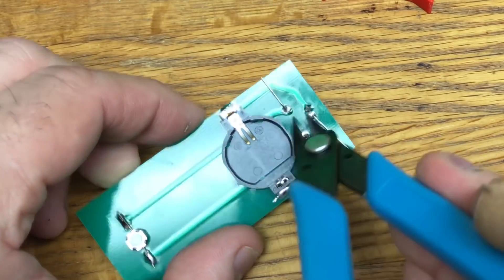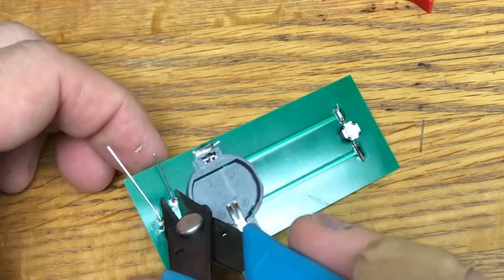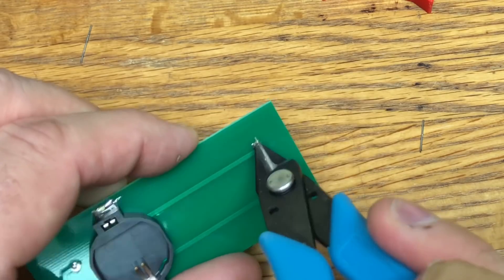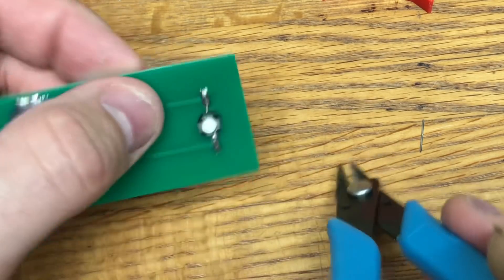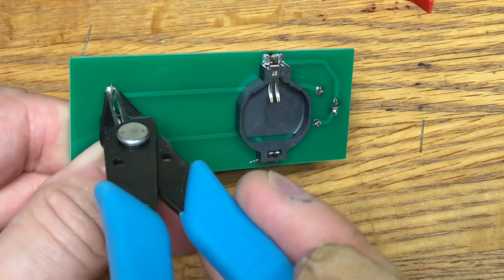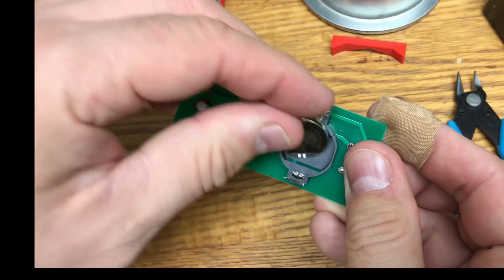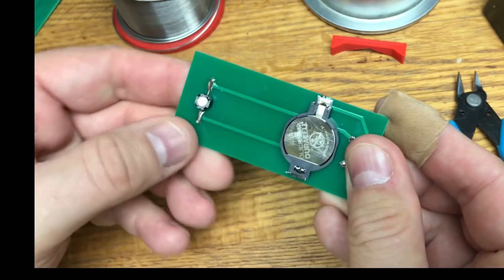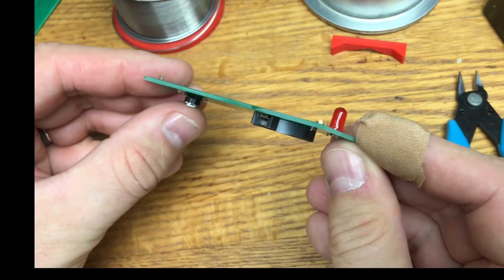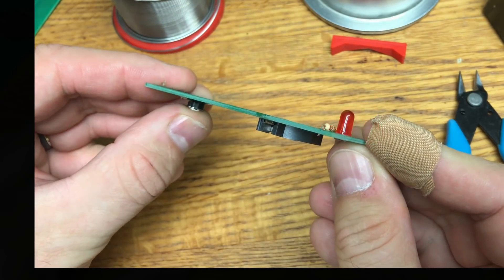So now we just need to clip the leads. Just use the side cutters. Clip them right off. If there's any extra on the switch you can clip those off as well. And now we can test it. I'll put a 2032 battery in the slot and press the button to see if the LED lights. Yes, everything's perfect.